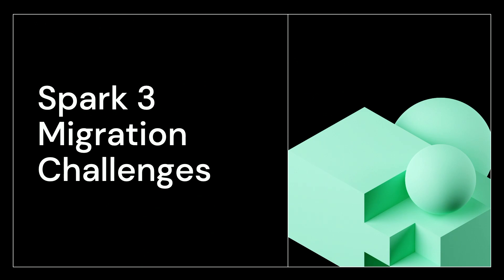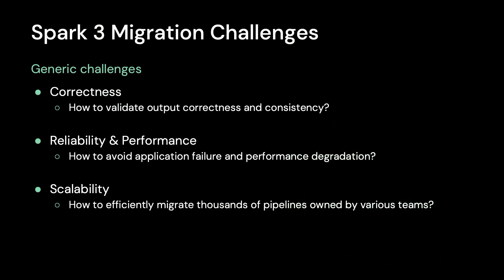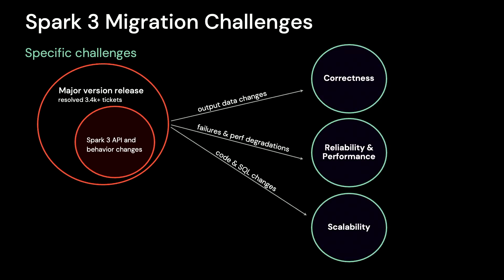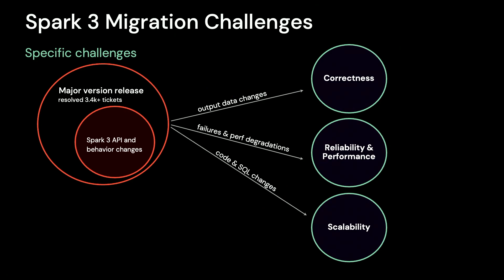Now let's talk about migration challenges. At a high level, we face three major migration challenges: correctness, reliability and performance, and scalability. Spark 3 is a major version release that resolved over 3,000 Jira tickets. However, it's not fully backward compatible with Spark 2.4, due to more than 80 API and behavior changes. These changes may cause output data changes and job failures. They are documented at a high level in the official SQL migration guide. In addition, due to the large number of changes in the release, bugs and side effects are inevitable. Detecting and fixing those issues at our scale is a big scalability challenge.